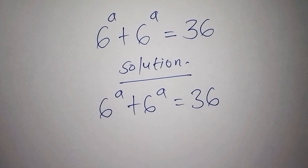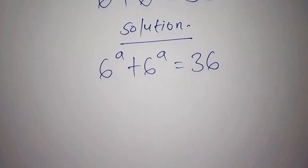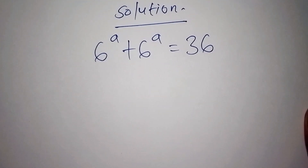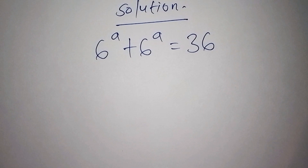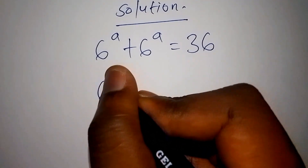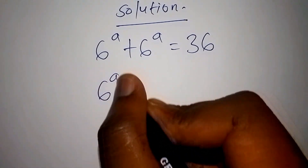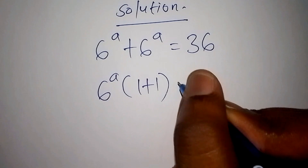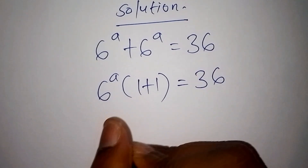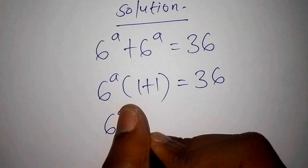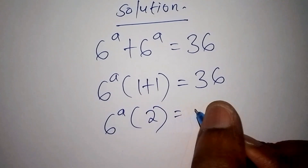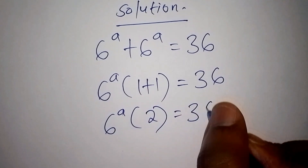Let us now kick start by factorizing 6 to the power of a plus 6 to the power of a. This can be written as 6 to the power of a into bracket 1 plus 1, which is equal to 36. So we have 6 to the power of a multiplied by 2 is equal to 36.